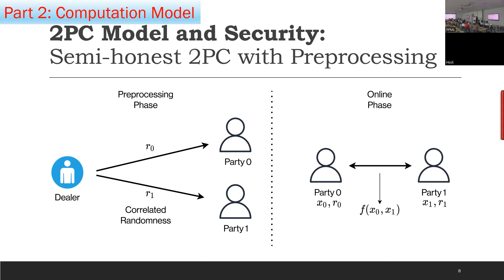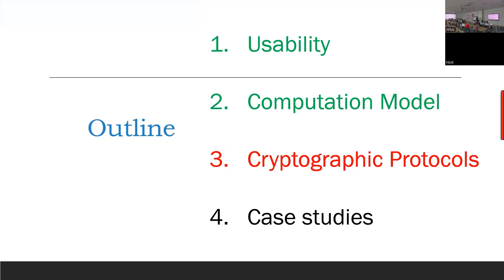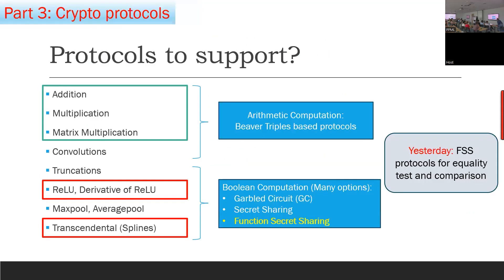There was a dealer in a pre-processing phase giving out correlated randomness R0 and R1 to parties P0 and P1. This correlated randomness was completely independent of all the inputs into the computation — given once right at the beginning. Then there was an online phase where parties brought their inputs, used their correlated randomness, and computed the function f of x0. Cryptographic protocols included arithmetic computations with Beaver triples doing a great job: addition, multiplication, matrix multiplication, and convolutions.